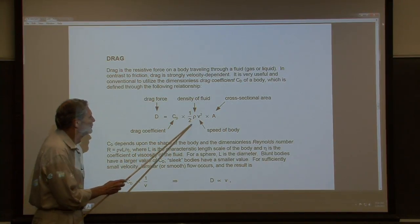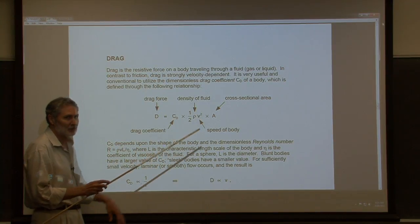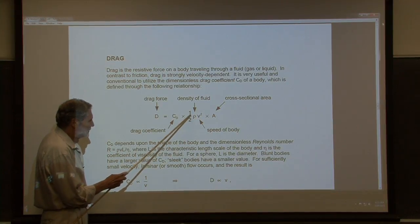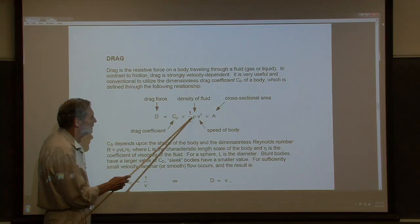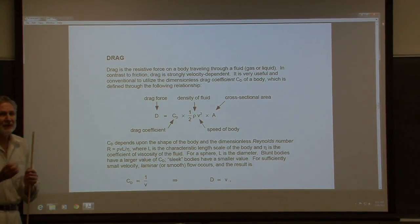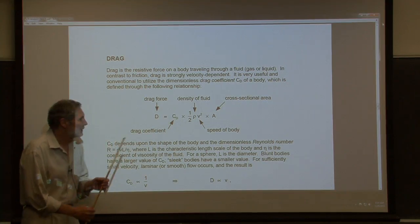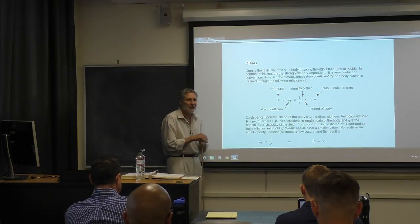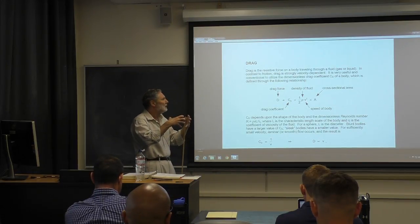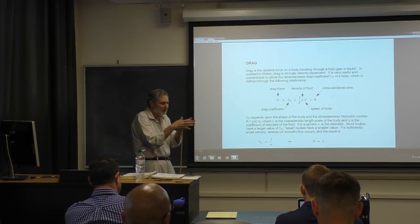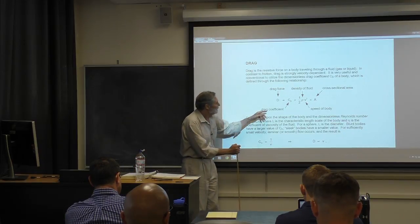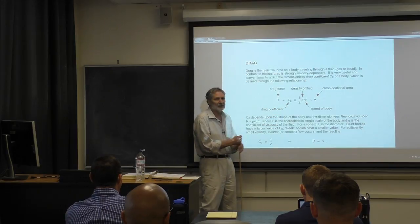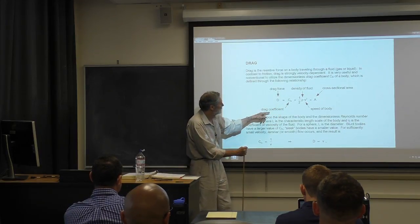The drag force formula includes a factor of one-half rho times v squared, where rho is the density of the fluid, v is the speed of the body relative to the fluid, and A is the cross-sectional area. The drag coefficient depends on two things: the shape of the body — a blunt body gives a bigger drag coefficient than a sleek aerodynamic one — and what's called the Reynolds number.